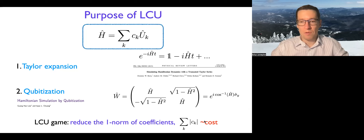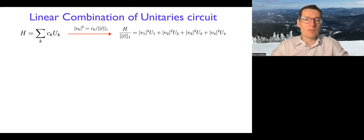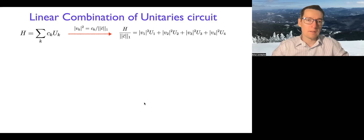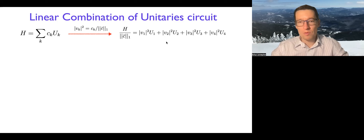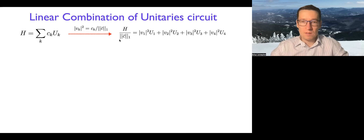You may wonder why the one-norm of coefficients is so important — essentially, you want to lower it. What we actually encode as a circuit is not the Hamiltonian itself, but for a simple example where the Hamiltonian is decomposed into four unitaries, what we encode is the Hamiltonian divided by the one-norm of coefficients. This object can be encoded because the squared coefficients that appear in it sum to one.